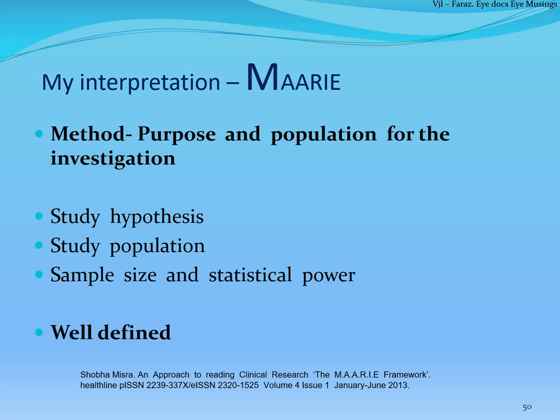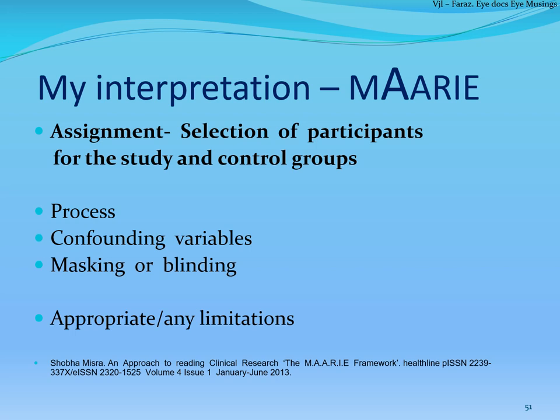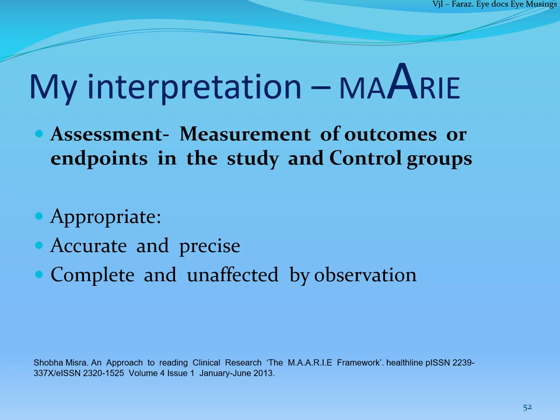A in MARI stands for Assignment — the selection of participants into study and control groups. Evaluate the process of assigning the sample into those two groups, whether any confounding variables are considered, and whether there is any randomization or blinding. Note whether the process looks appropriate or identify any limitations. The second A stands for Assessment — measurement of outcomes in study and control groups. Check whether there is any difference in outcome between the groups, whether they are statistically different, and whether the sample size is sufficient to claim statistical significance.